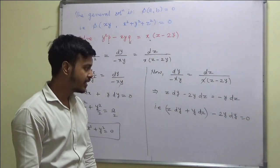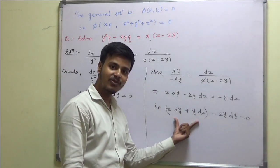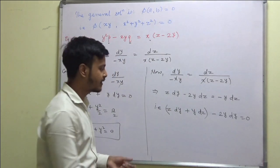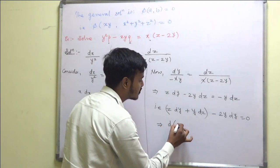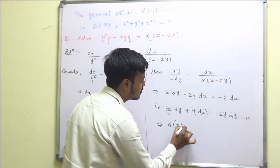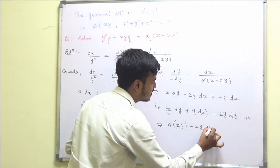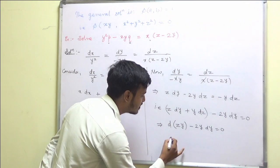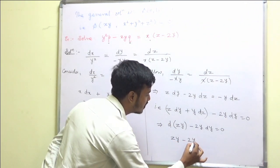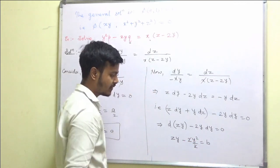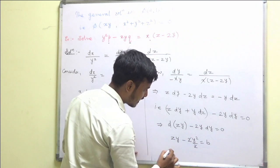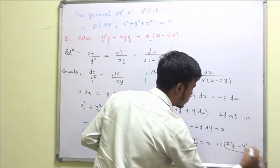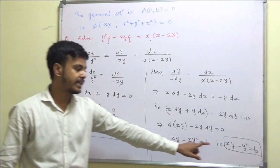Variables are now separable. The bracket z·dy + y·dz is the derivative of the product yz — first function times derivative of second plus second times derivative of first. So we have d(yz) - 2y·dy = 0. Integrating: yz - 2y²/2 = b, which simplifies to yz - y² = b as the second integral.